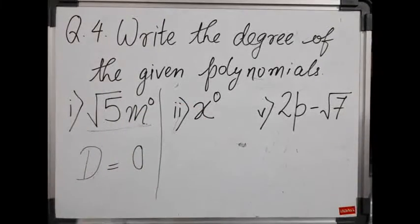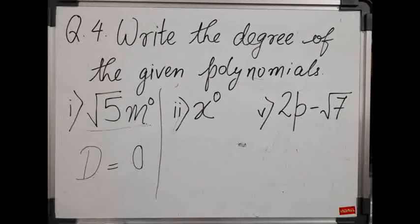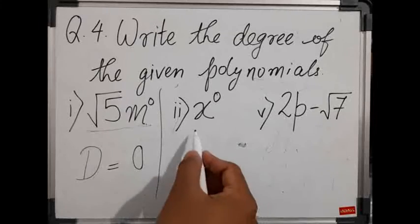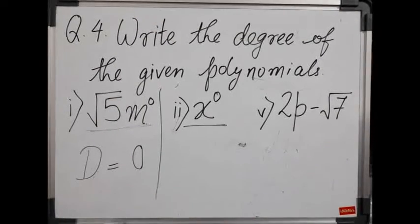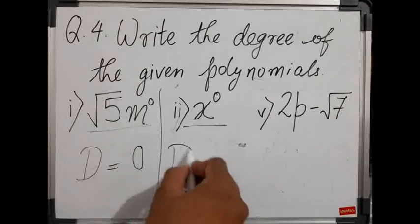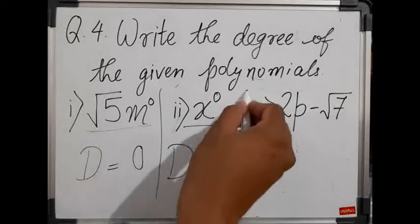Moving on to the next question, that is x raised to 0. Here also, we already have one term, x raised to 0. The variable is x and the power is 0. It is the only power, so this is the highest power. Here also, the degree equals 0.